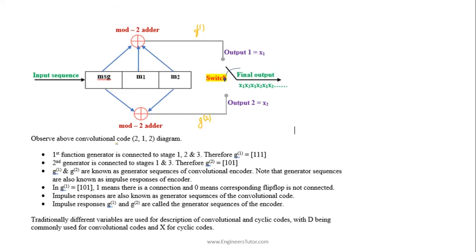Consider a 2,1,2 convolutional encoder. It has two outputs. The first generator function G1 is connected to all stages of the encoder, so its coefficients (tapped gains) are 1, 1, 1. The second generator G2 has coefficients 1, 0, 1 — connected to only the first and last stage of the encoder. G1 and G2 are known as generator sequences of the convolutional encoder.